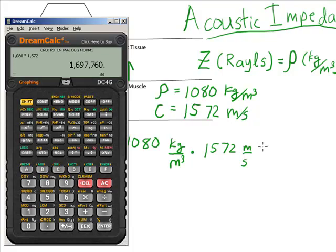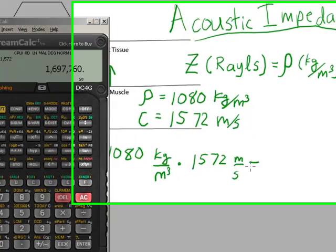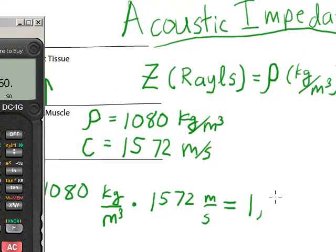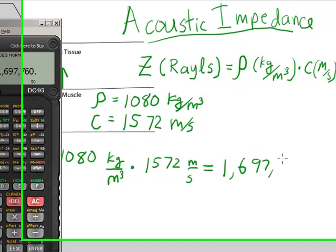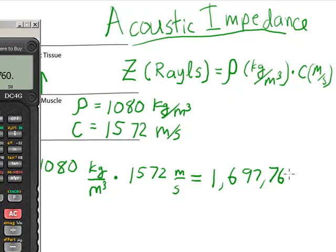So that's equal to 1,697,000. The units are kilograms in the numerator, meters in the numerator, and meters cubed in the denominator. One of those is going to cancel one of these, and then seconds in the denominator.